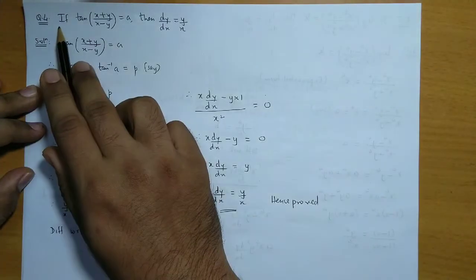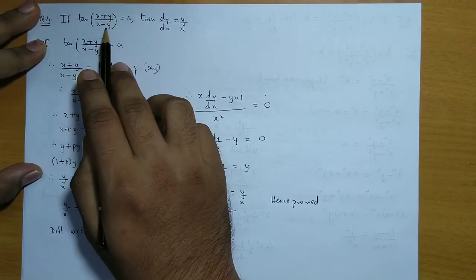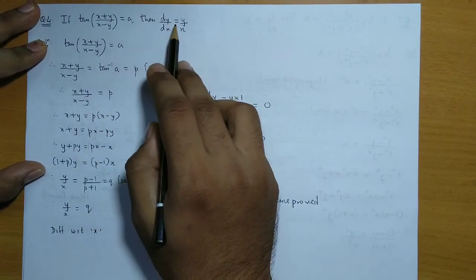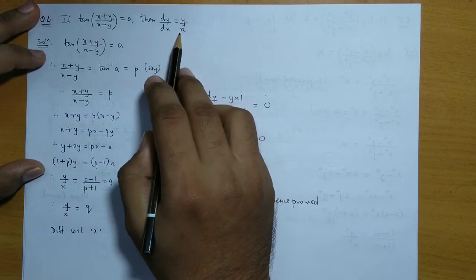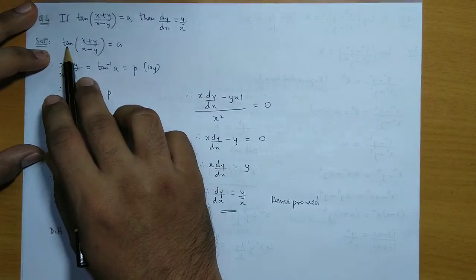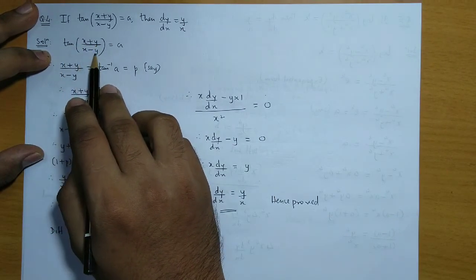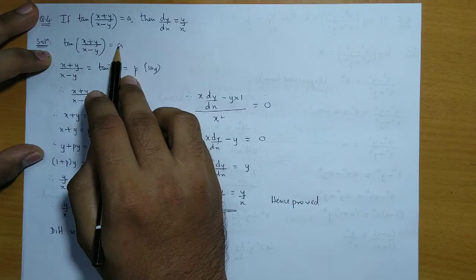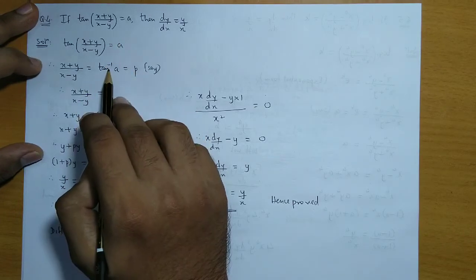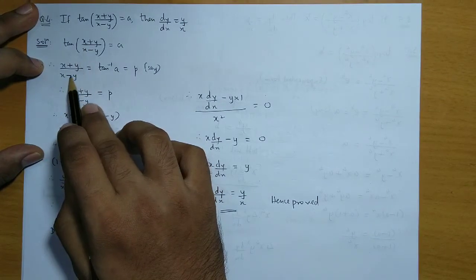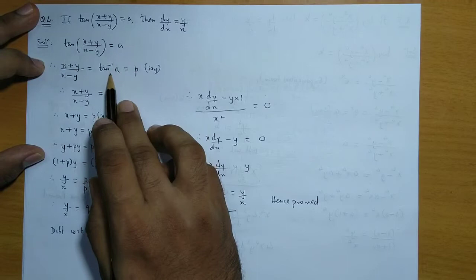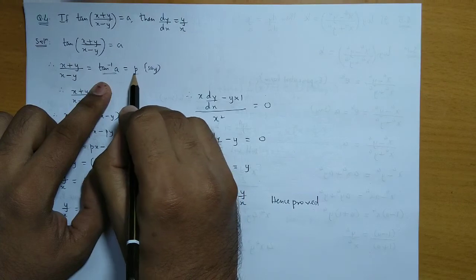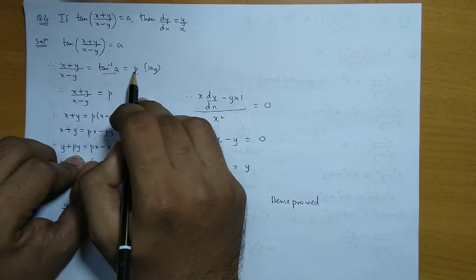Question number 4: if tan of (x+y)/(x-y) is equal to a, then we have to show that dy/dx is equal to y/x. Now let's see the solution. Since tan of (x+y)/(x-y) = a, if we take the tan term to the other side, we get x+y upon x-y equal to tan inverse of a. This is a constant value, so let's call it p. So let x+y upon x-y be equal to p.